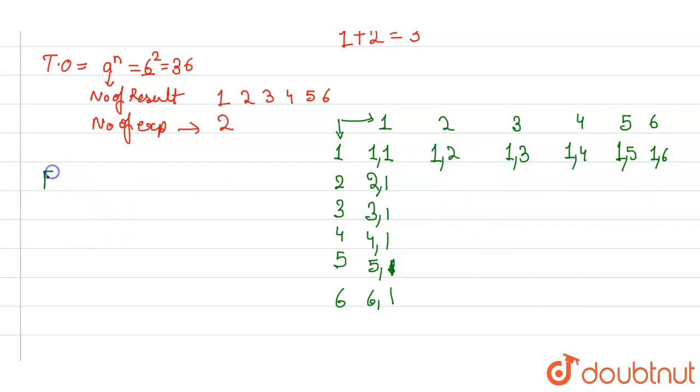Now, favorable outcomes. We want 10, 11, and 12. There is only one case where we can have 12: (6,6). There are two cases for 11: (5,6) and (6,5). And for 10, there will be three cases: (6,4), (4,6), and (5,5).